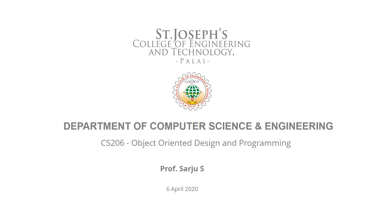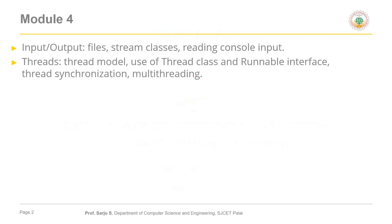This is the third lecture in the fourth module of object-oriented design and programming. In the first two lectures we discussed Java files, and the second lecture covered input and output stream classes. In this lecture we are going to discuss character stream classes in Java.